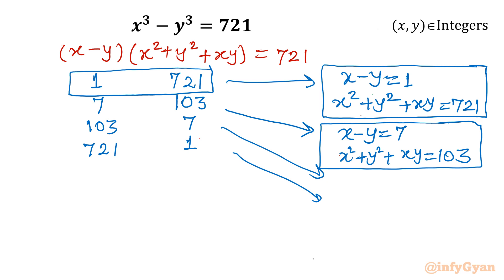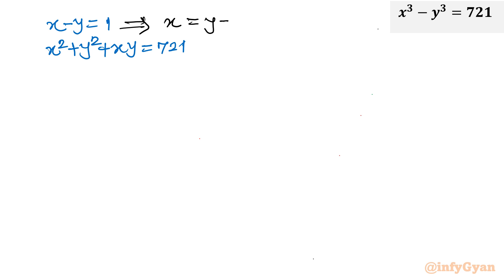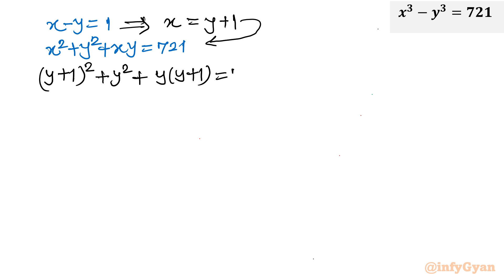Now we have to solve all systems of equations one by one. Let me consider the very first one: x - y = 1 and x² + y² + xy = 721. From the first equation, x = y + 1. Substituting into the second equation: (y + 1)² + y² + y(y + 1) = 721.